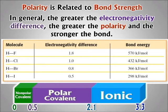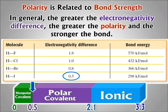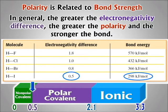Let's start with the bond on the bottom, between hydrogen and iodine. The electronegativity difference turns out to be 0.5. Since 0.5 is right on the line, it goes with the one above it — it's a polar covalent bond, very slightly polar. That bond has an energy of 298 kilojoules per mole. Since they're all in the same unit, we can just compare the numbers.